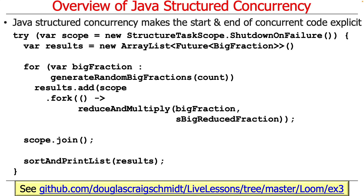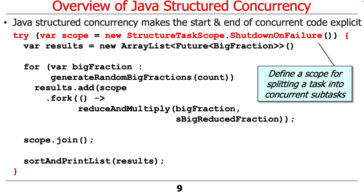Java's structured concurrency implementation makes the start and end of concurrent code explicit by using essentially block-structured formatting. At a high level, we have a new capability called a structured task scope, and we can make an instance of one of these things and use it in the context of what's called the try-with-resources block. The try-with-resources block was added a long time ago, and it allows the scope of something to be controlled by the block in which it's created.